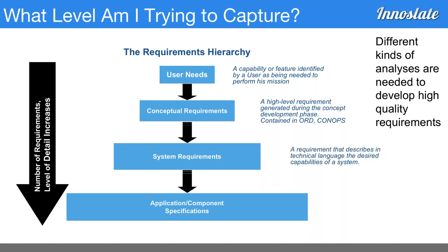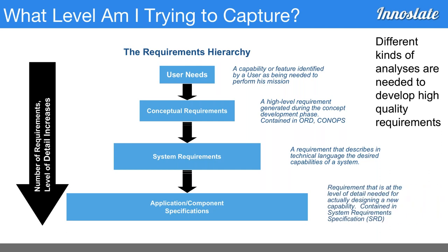Then you have system-level requirements — detailed functional and performance requirements for the system itself. That's still not enough because the system is usually too big to buy or build directly. So you need to get down to the application and component level with specifications needed to buy or build something. As you decompose, the number of requirements increases significantly — sometimes by orders of magnitude — which makes a spreadsheet approach very difficult.